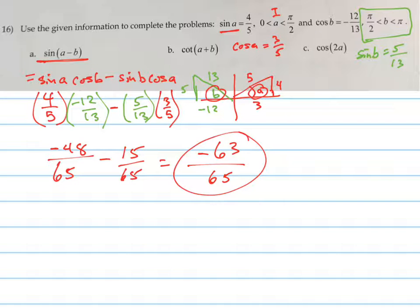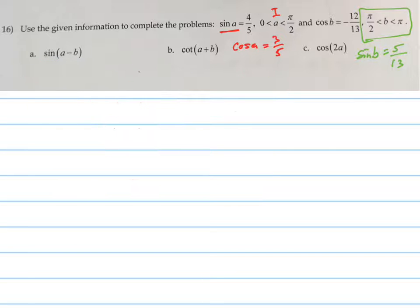So for the cotangent one, you do the same thing with a different formula. Now you don't have a cotangent formula. I'm sure they exist, but your teacher's not showing that to you. So you're going to have to rewrite this cotangent as, remember cotangent is the same as 1 over the tangent of A plus B.